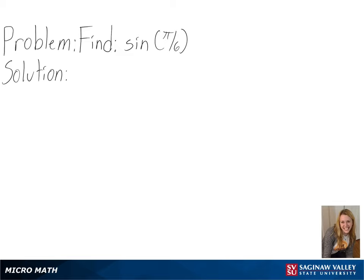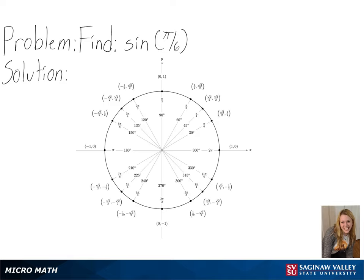Our problem is to find sine of pi over 6. To solve this, we will be using a unit circle, so we will start at (1, 0) and then move counterclockwise until we have traveled the distance of pi over 6.